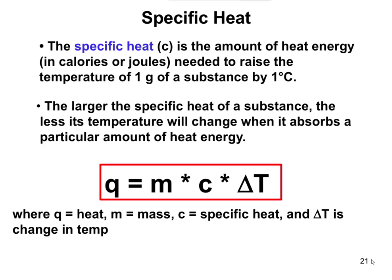There's a formula here that you don't need to memorize because it's given to you on your formula sheet — you just have to be able to use it. Q is equal to MC delta T. Q is going to be heat.